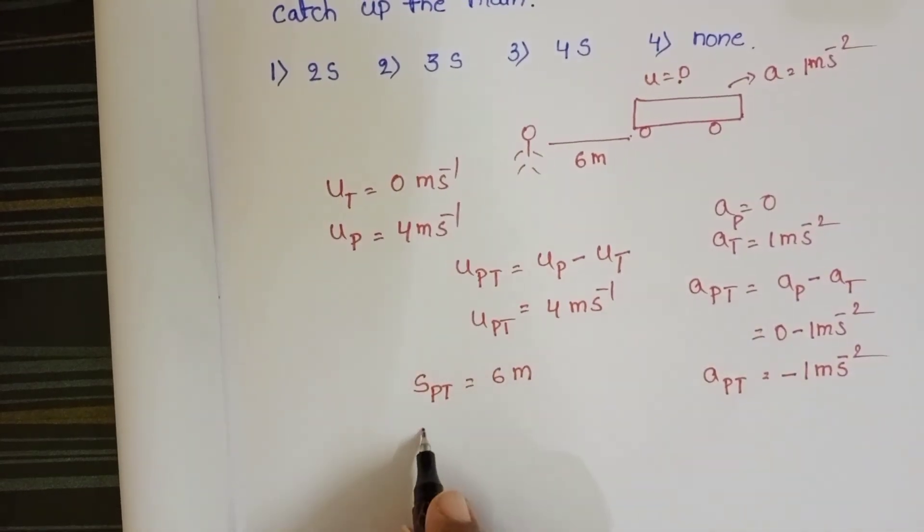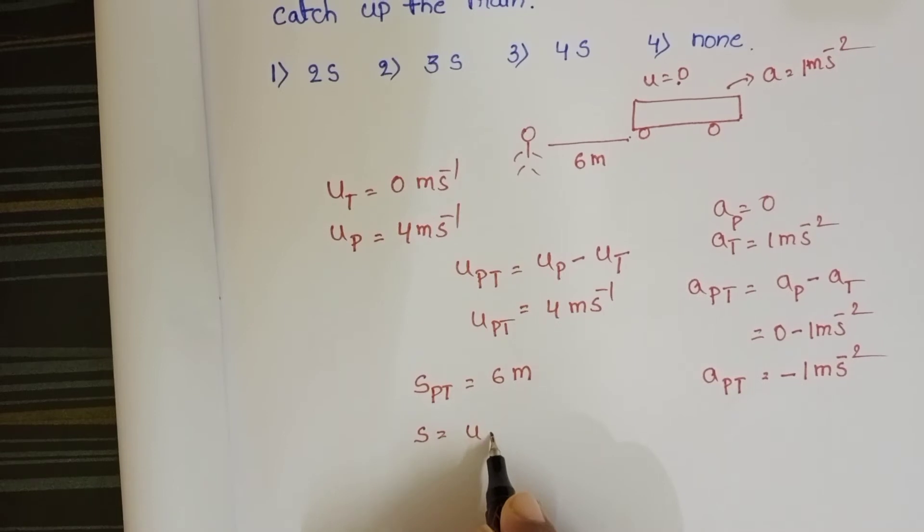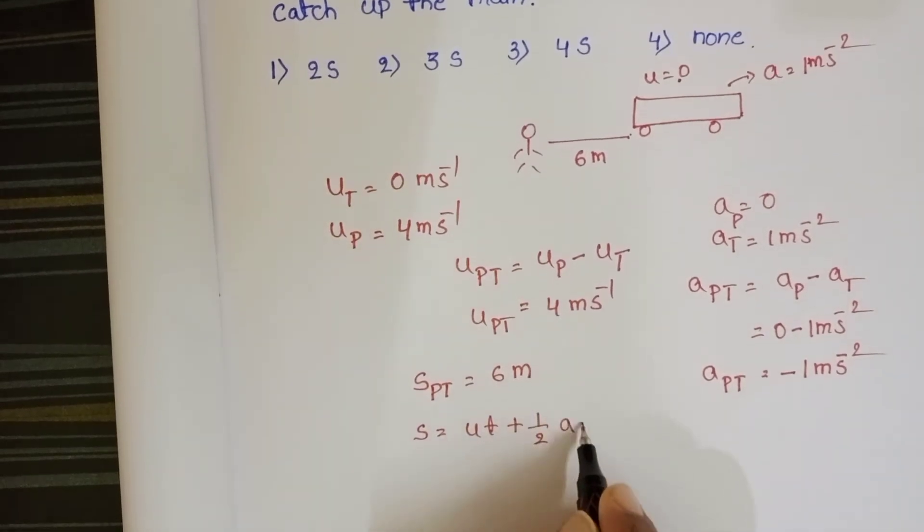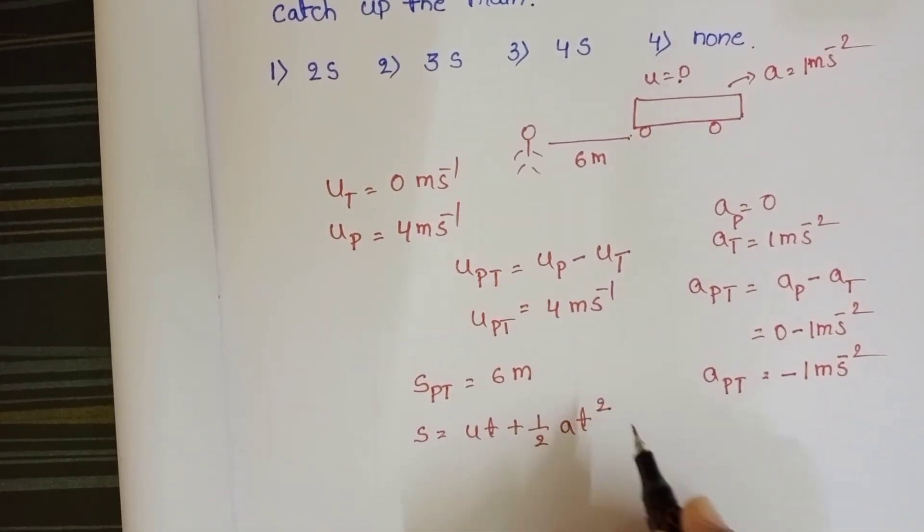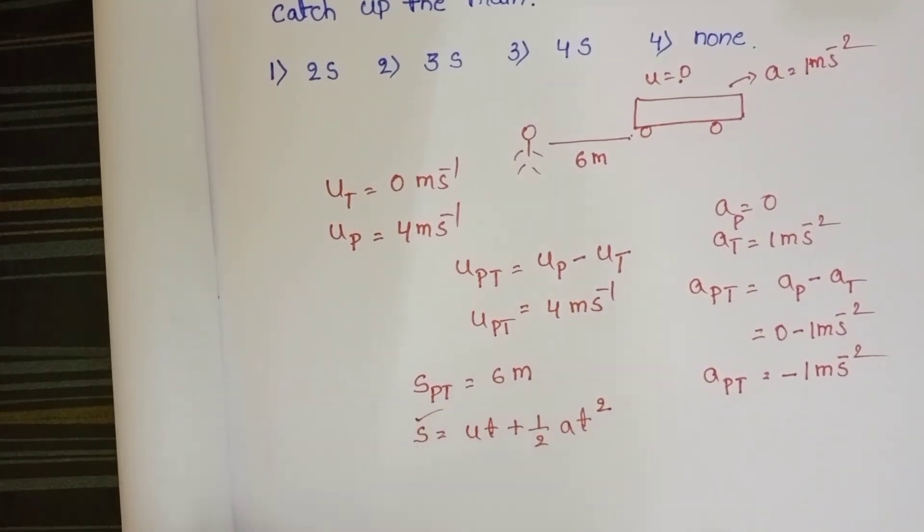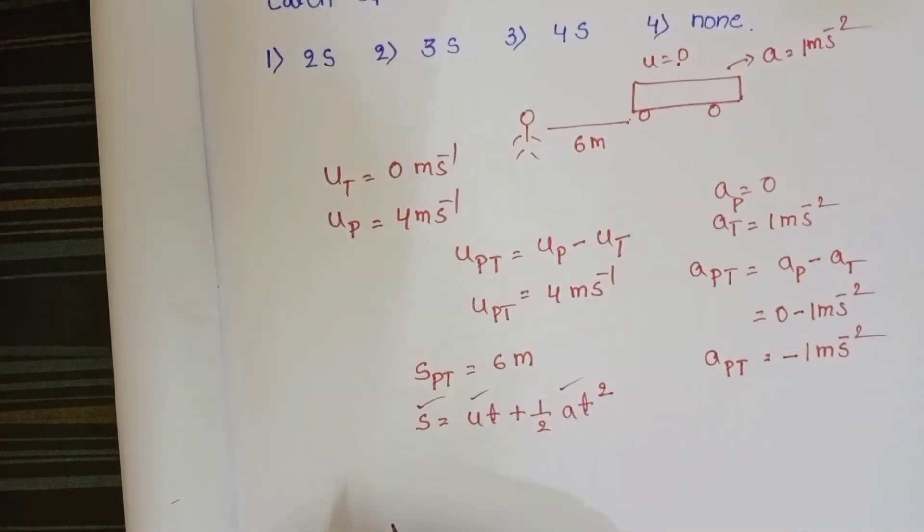We know the equation of motion: S equals ut plus half at squared. To calculate the time, use this equation. Here we know relative distance, relative velocity, and relative acceleration. Then find out the time.